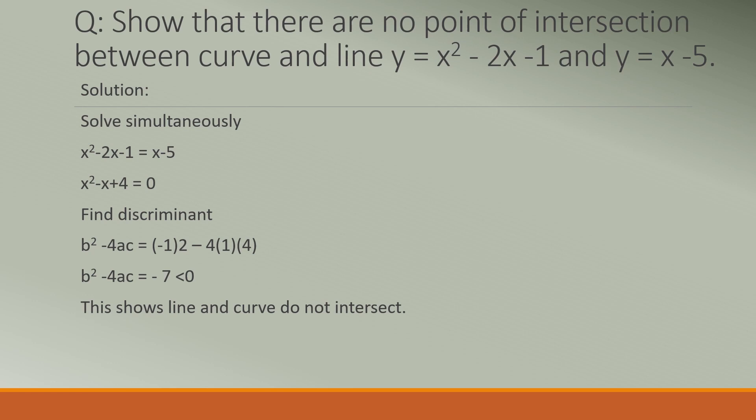For example, if b squared minus 4ac equals positive 17, then we would say the line and the curve are intersecting at two points.